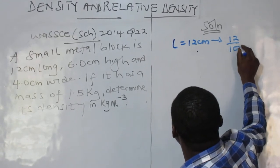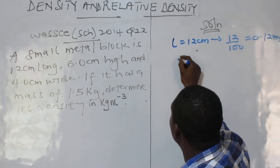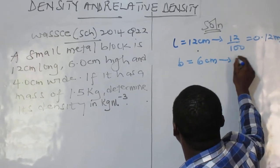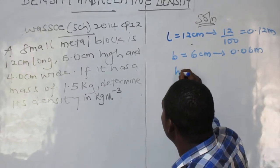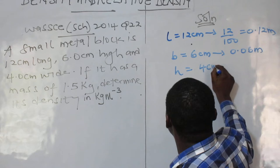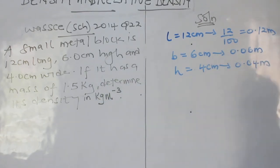Just divide by 100. 0.12 meter. Now the breadth is how wide it is. That will give you 0.06 meter after conversion. And the height 4 cm will also produce 0.04 meter. That's when you divide over 100.